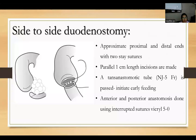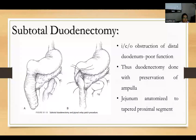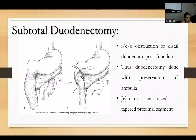For side-to-side duodenostomy, the proximal and distal ends are approximated with two stay sutures, parallel 1 cm incisions are made, a trans-anastomotic nasojejunal tube of 5 French size is passed, and an anterior and posterior layer anastomosis is done using interrupted Vicryl sutures. For subtotal duodenectomy, done when there is obstruction of the distal duodenum affecting Hoover function, duodenectomy is performed with preservation of the ampulla and the jejunum is anastomosed to the tapered proximal duodenal segment.